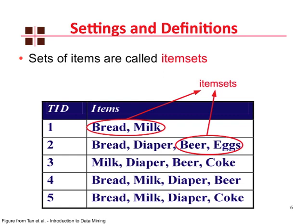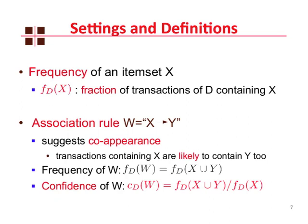Given an itemset X, we define the frequency of the itemset X as the fraction of transactions in the dataset that contain this itemset. We also define association rules as an expression involving two itemsets X and Y, and this expression basically suggests the co-occurrence of X and Y in the same set of transactions. We define the frequency as the frequency of the union of itemsets X and Y, and the confidence, which is basically how much we trust this association.